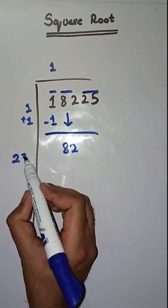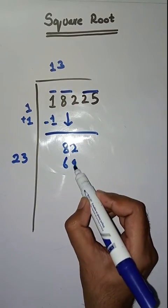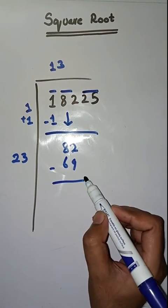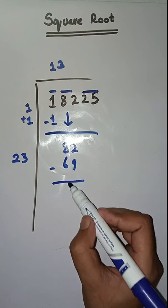Now we will take a number 3. 23 times 3 is 69. Minus that, what do we get? 12 minus 9 is equal to 3. 7 minus 6 is equal to 1.